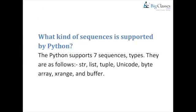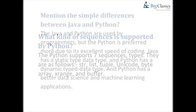What kind of sequences are supported by Python? Python supports seven sequence types. They are as follows: str, list, tuple, unicode, byte array, xrange, and buffer.